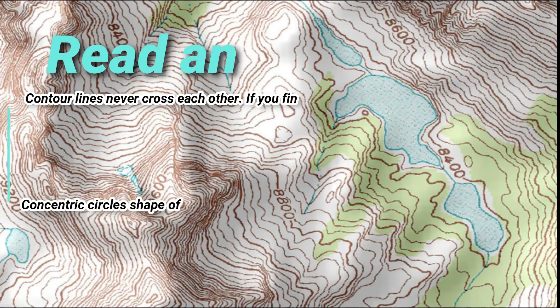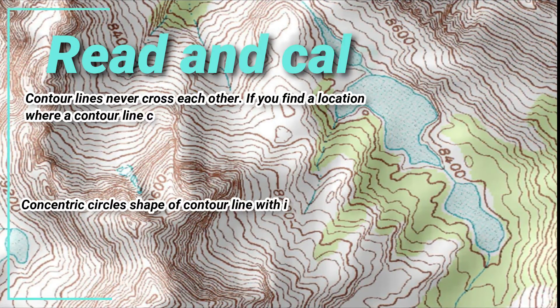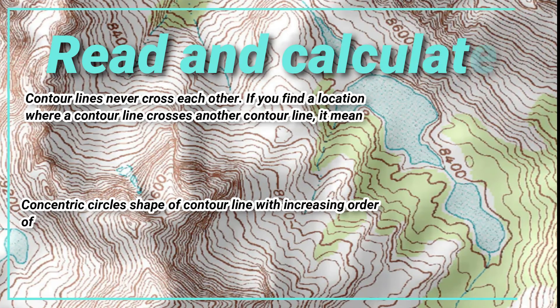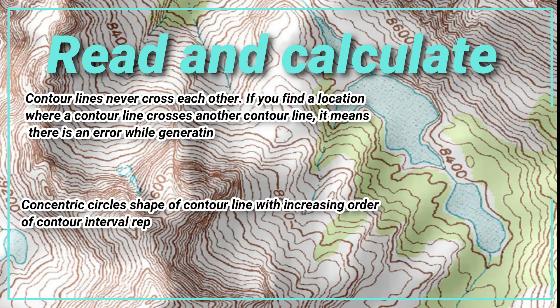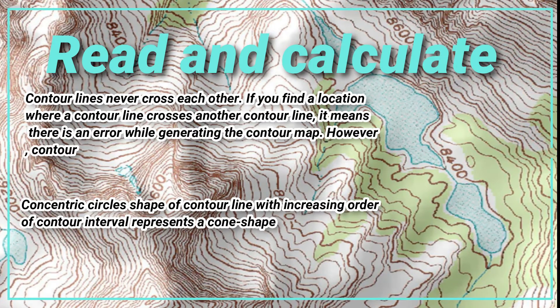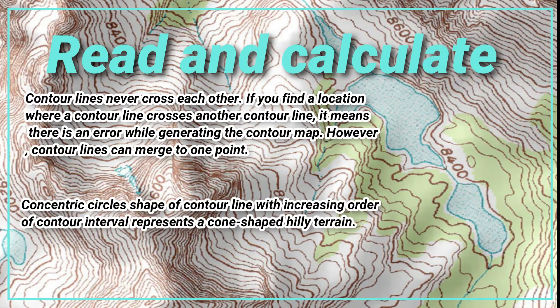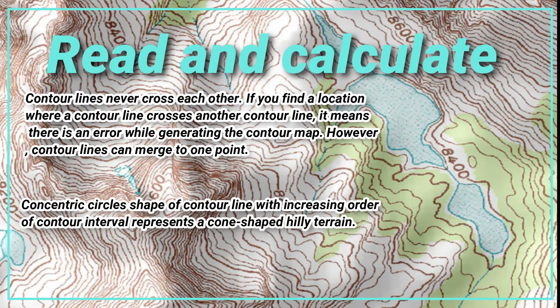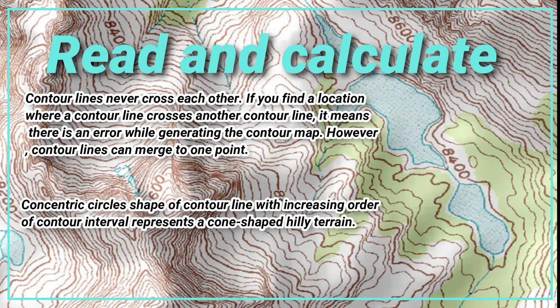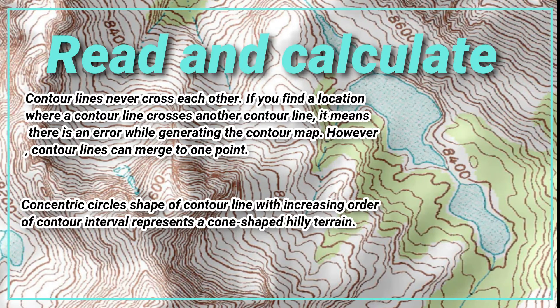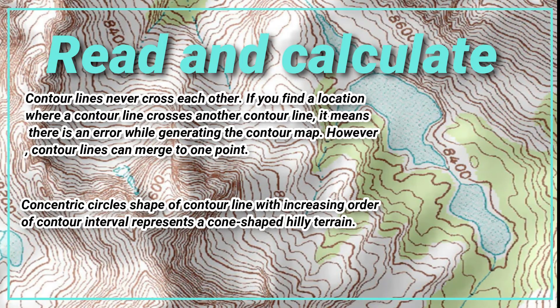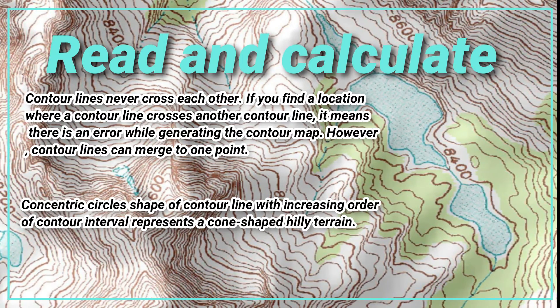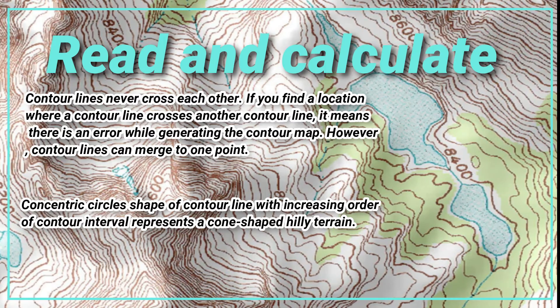Contour lines never cross each other. If you find a location where a contour line crosses another contour line, it means there is an error while generating the contour map. However, contour lines can merge to one point.